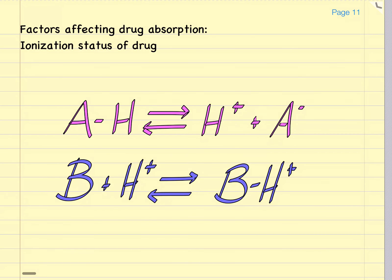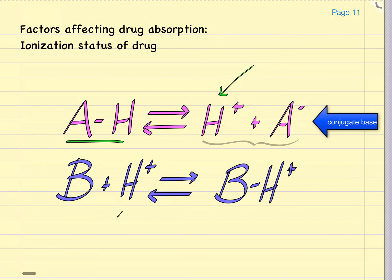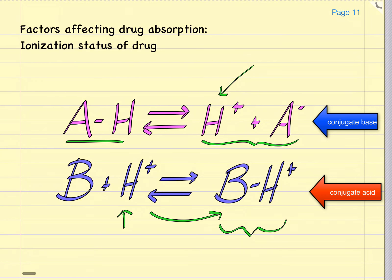In an aqueous solution, a drug that acts like a weak acid will give up a proton, becoming what is called a conjugate base. Protons in solution will jump on a base, converting it into its conjugate acid. It's important to note that acids and bases in their natural state have no charge — they are unionized — whereas their conjugate acids and conjugate bases do have a charge and are ionized.